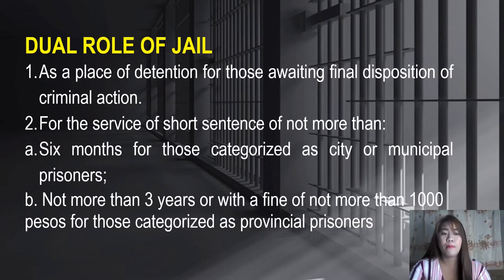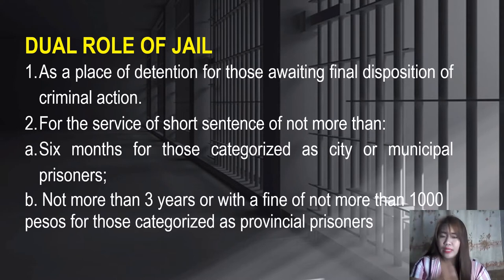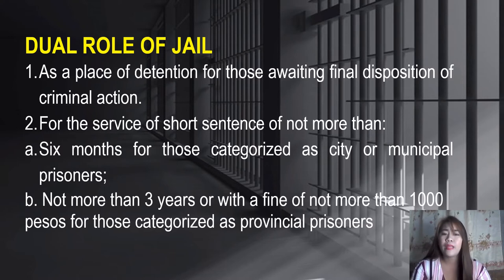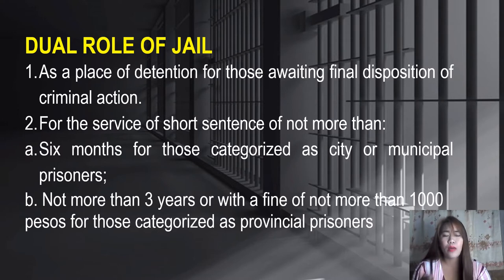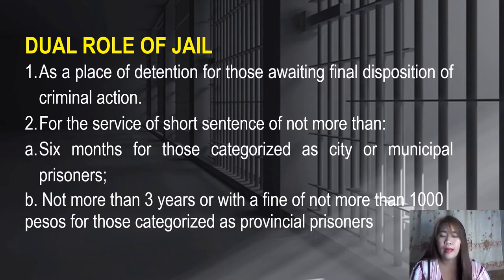The dual role of jail: Number one, jail is a place of detention for those awaiting final disposition of their criminal action — those still waiting for the decision on their case. Number two, jail is for the service of short sentences — not more than six months for city or municipal prisoners, and not more than three years or with a fine of not more than 1,000 pesos for those categorized as provincial prisoners.